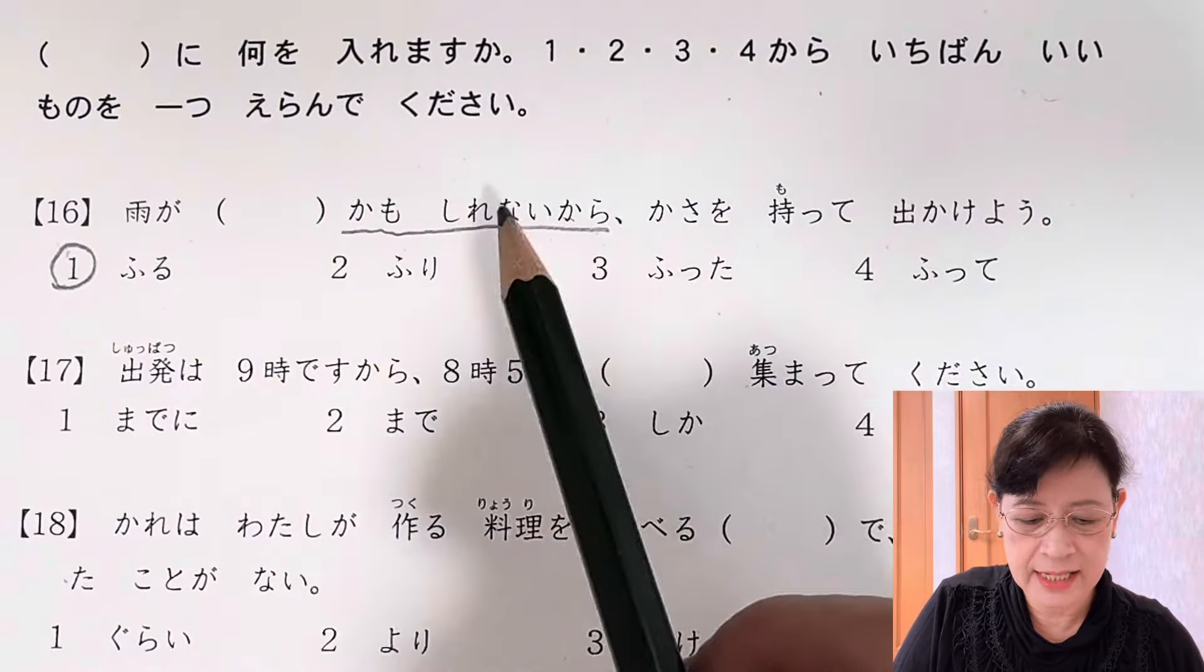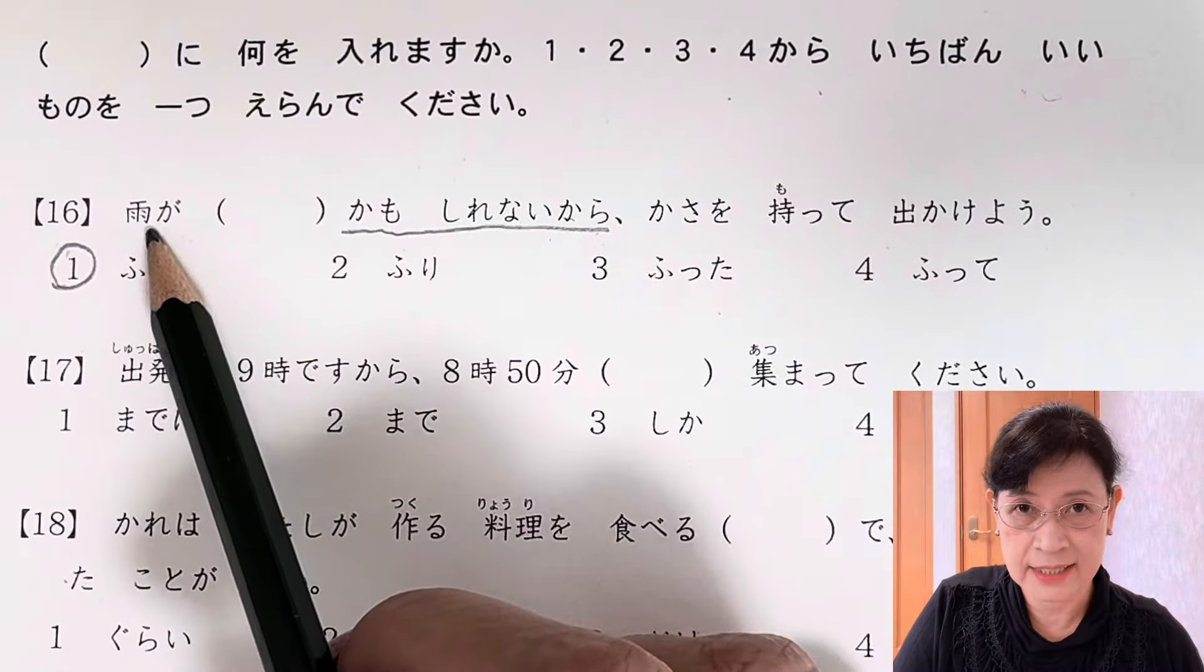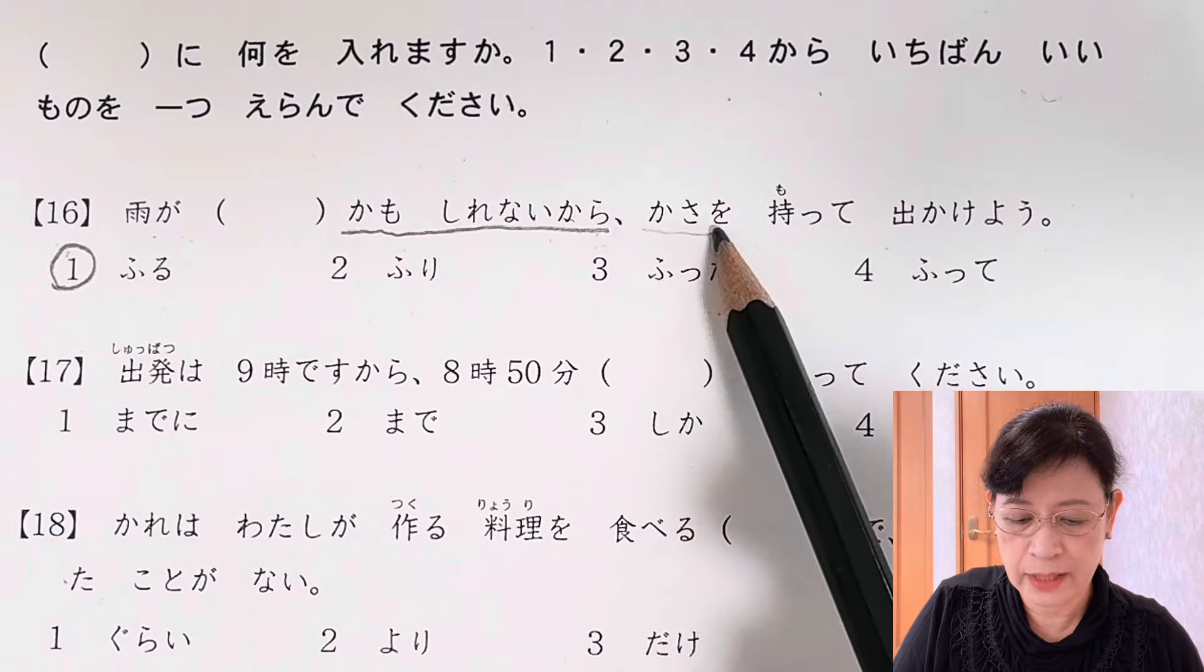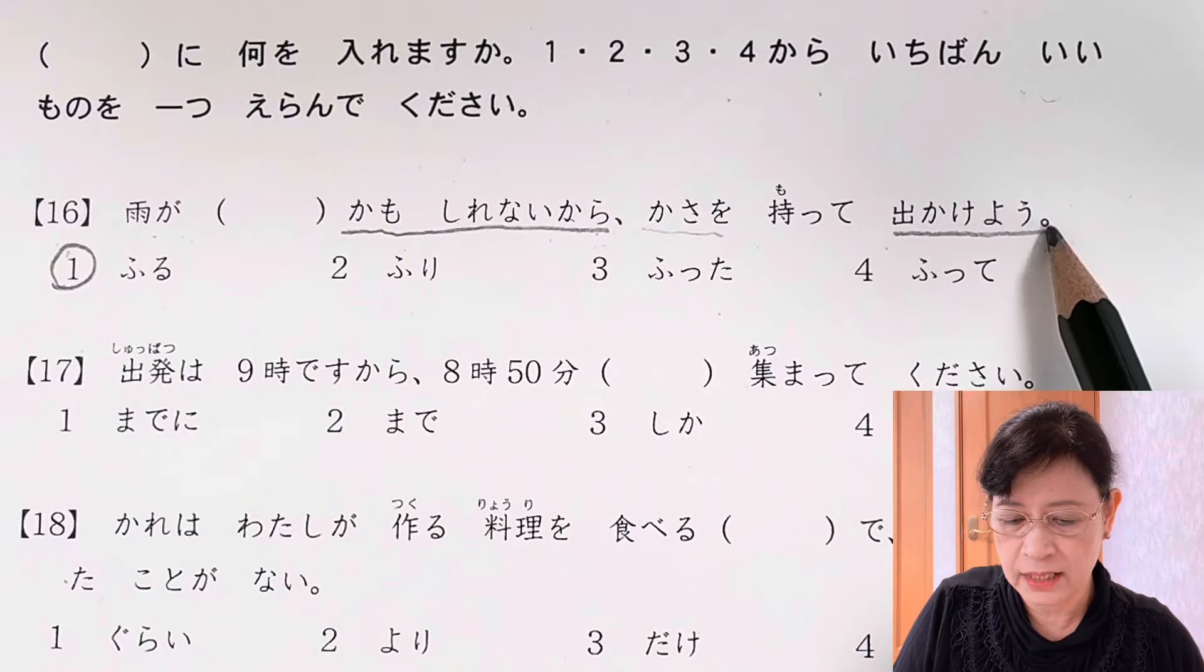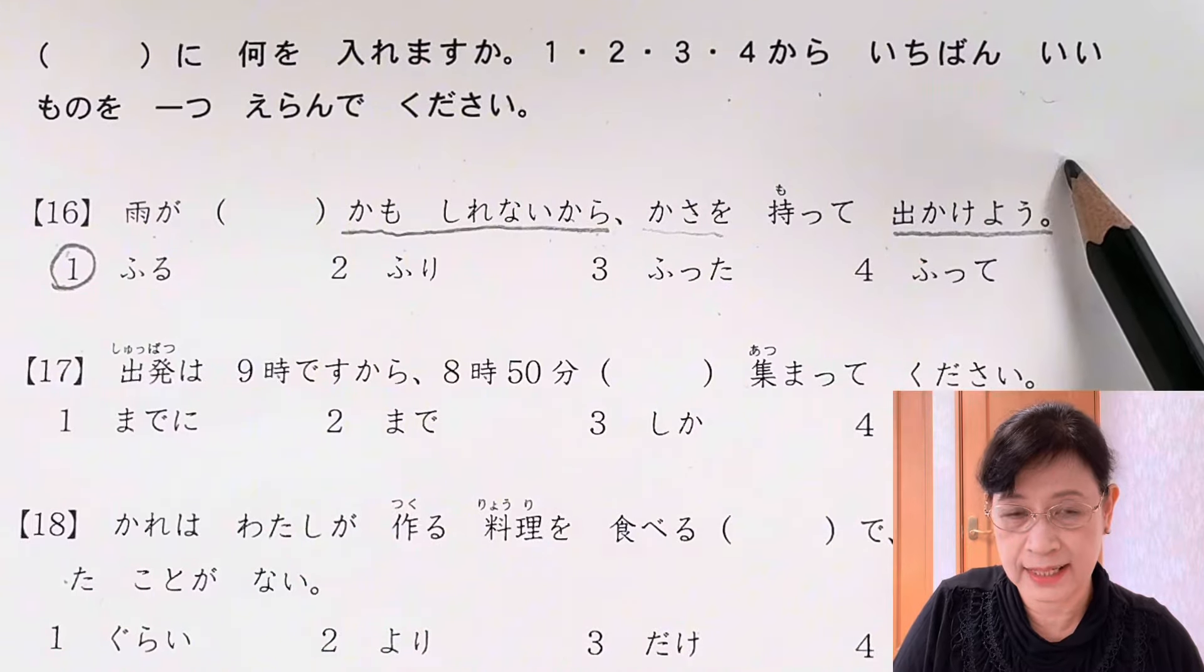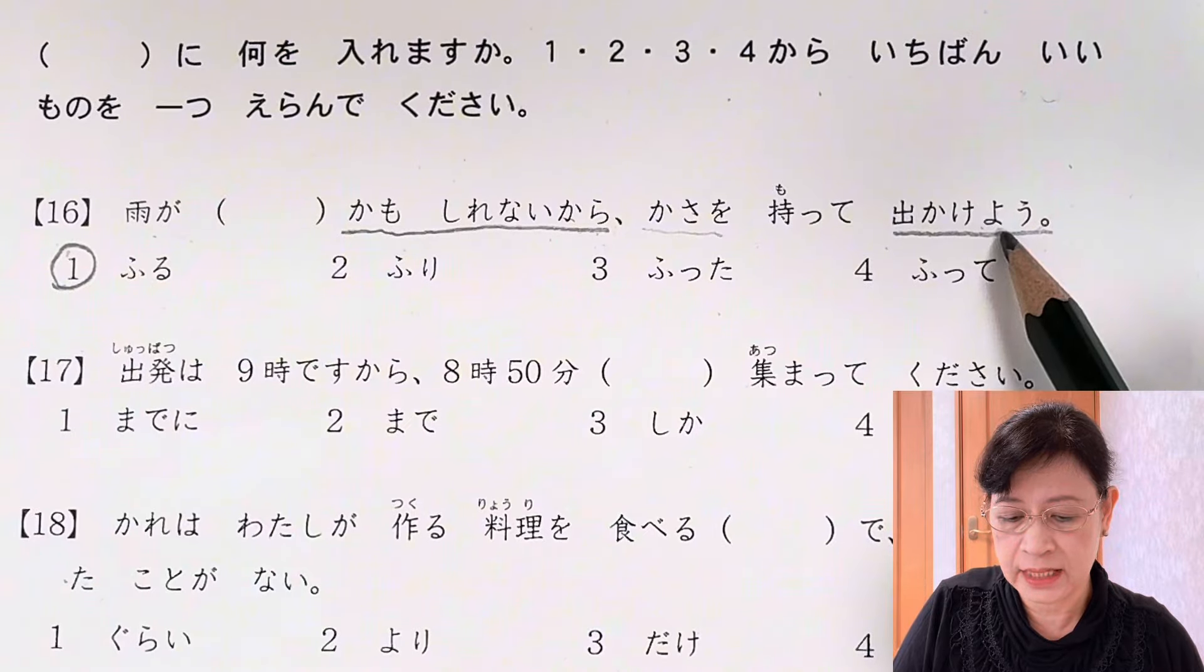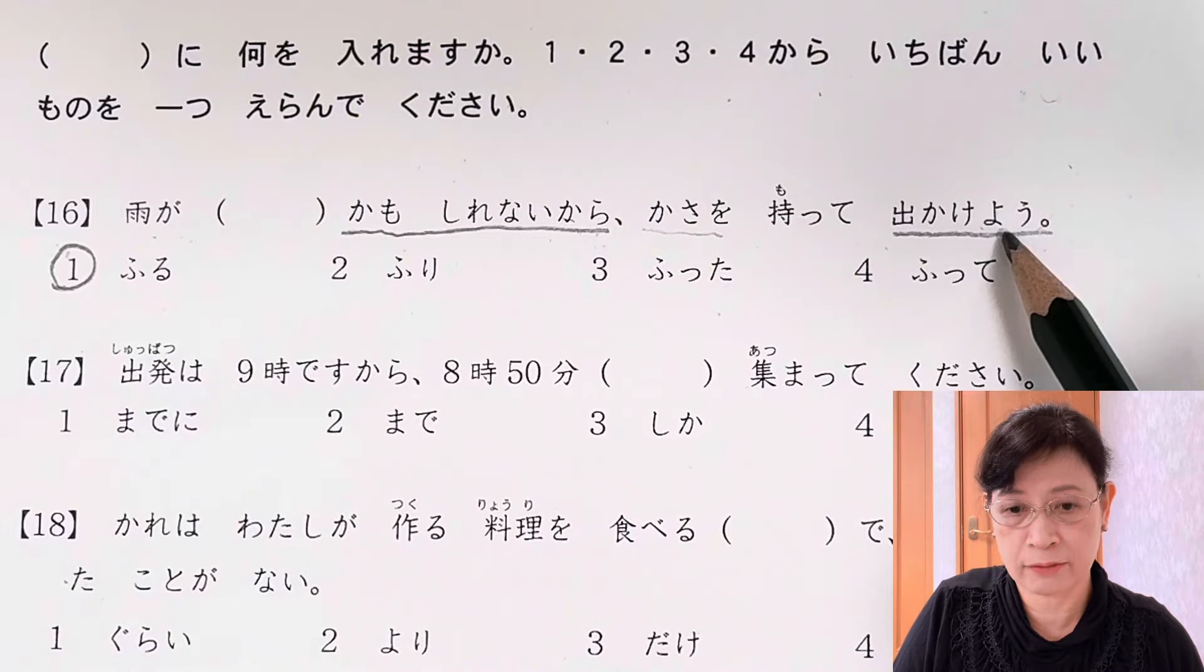The answer is ふる. 雨がふるかもしれないから - it might rain, so let's bring our umbrella with us when we go out. This is でかけよう, the casual form; でかけましょう is the polite form.